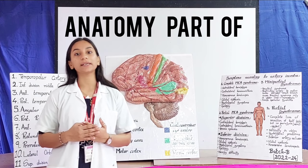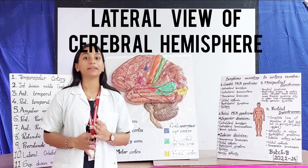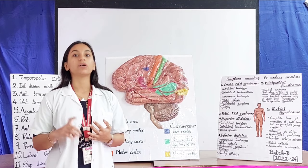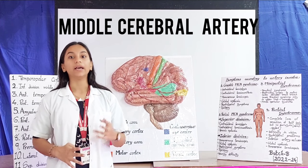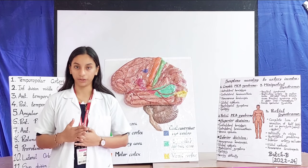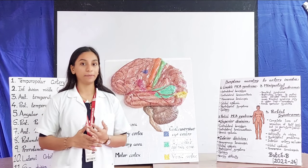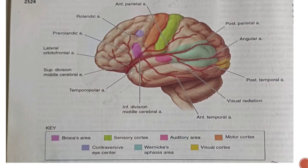Today, we are here to discuss about the cerebral hemisphere, its lateral aspect, and the distribution and branches of the middle cerebral artery and its further bifurcation into inferior and superior divisions. There are several functional areas in the cerebral hemispheres, such as the motor cortex, sensory cortex, and the visual cortex.